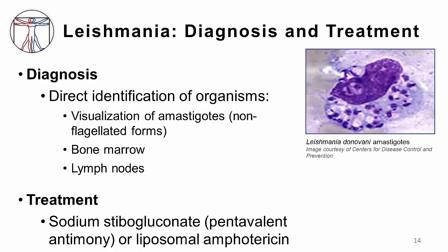Diagnosis of Leishmaniasis hinges on direct identification of organisms. One may visualize the amastigotes directly — these are non-flagellated forms found in the macrophages. This image shows an amastigote in the cytoplasm of a bone marrow cell. We may also see organisms directly in the bone marrow and in lymph nodes. Treatment is challenging, but one can use sodium stibogluconate or pentavalent antimony, or liposomal amphotericin.